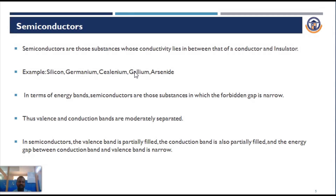Next, semiconductors. Semiconductors are substances whose conductivity lies between that of a conductor and an insulator. Examples are silicon, germanium, and gallium arsenide. In terms of energy band theory, there is a narrow gap between the valence band and the conduction band — approximately 1 electron volt — where both the conduction band and the valence band are separated by a certain distance. In a semiconductor, the valence band is partially filled, the conduction band is also partially filled, and the energy gap between them is narrow.